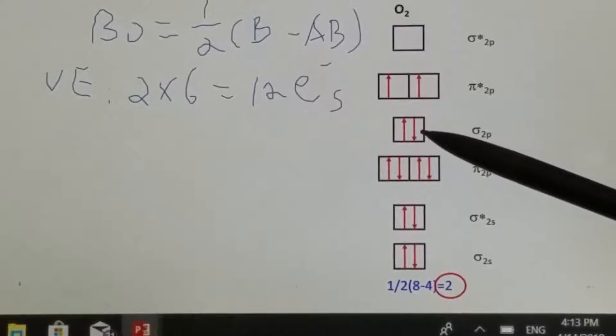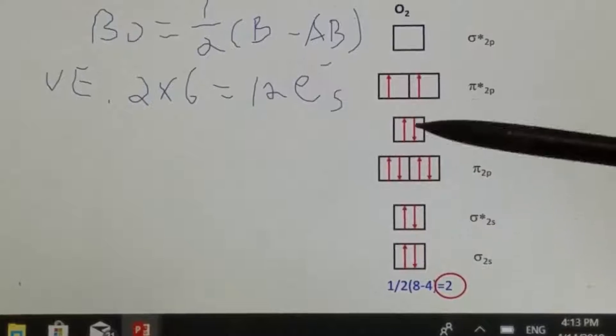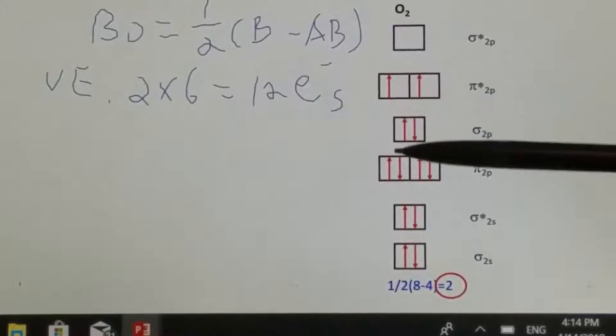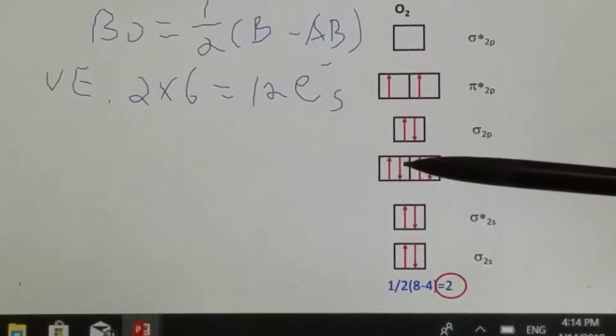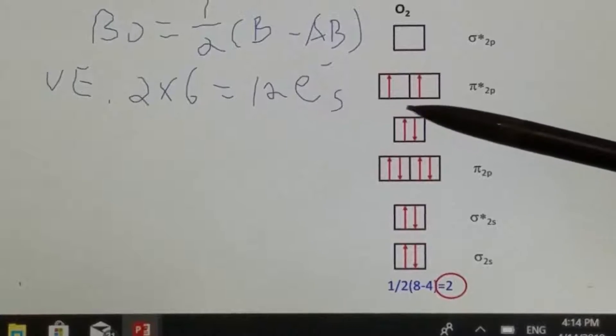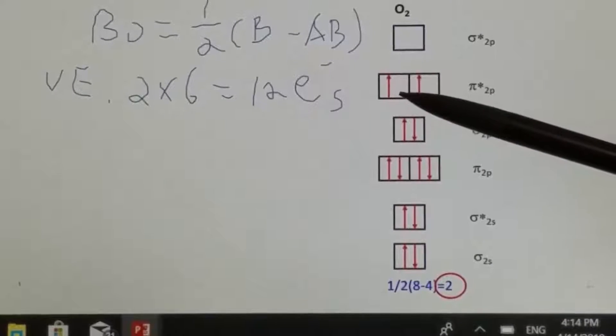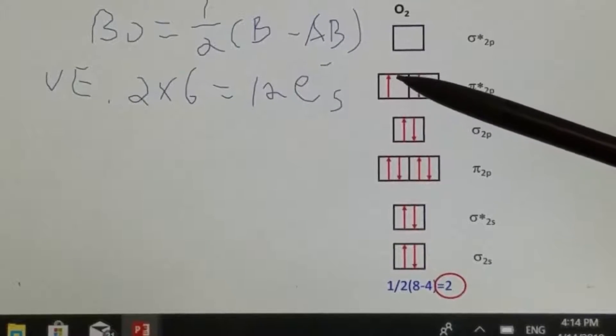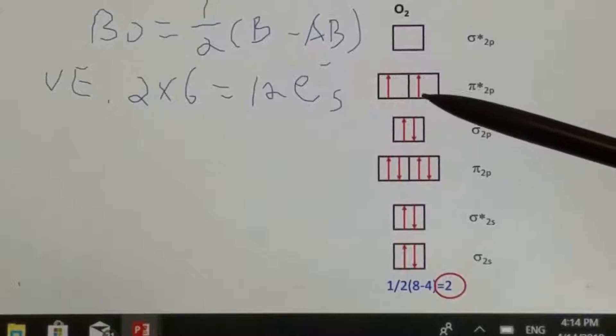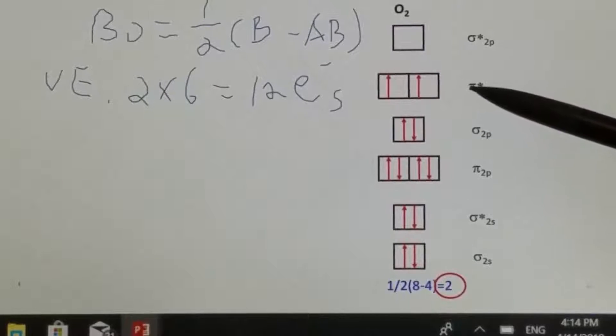Then the ninth and tenth will go to sigma 2p. So far, up to this point, it's 10 electrons already assigned, but we still have two more. According to Hund's rule, we can only fill one electron in one of the two identical anti-pi 2p orbitals with the same spin.